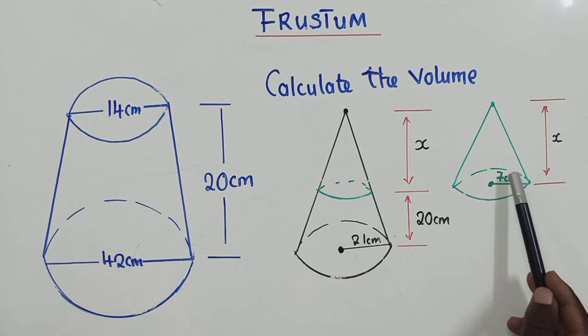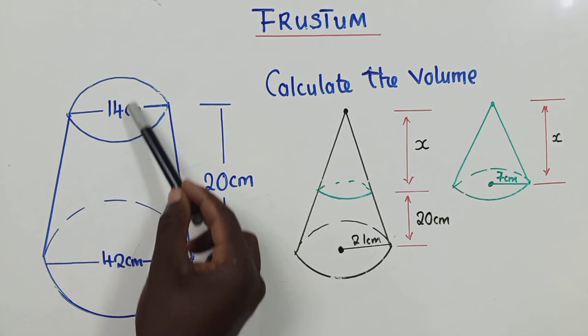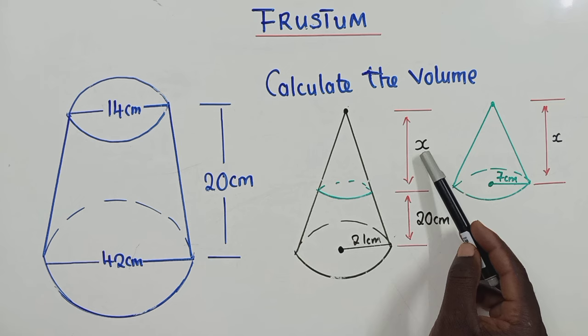So now here we've been given the diameter, which is 42 centimeters. We need to find the radius. So we just divide this by 2, we get our radius. This also by 2, we get our radius. So now our duty will be to find the value of x. So how do we find the value of x?